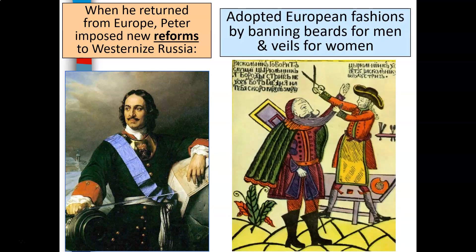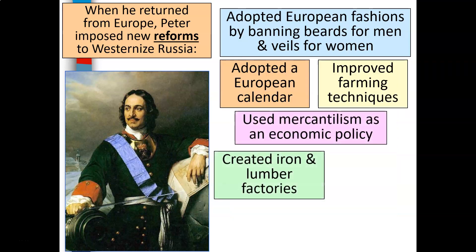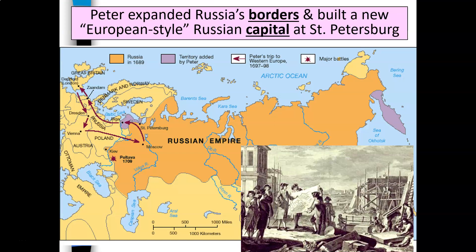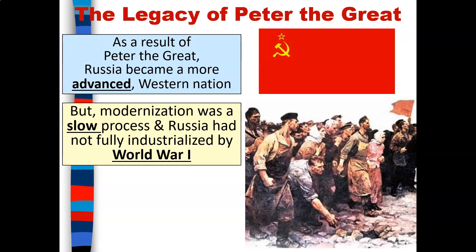When Peter returned from Europe, he imposed new reforms to westernize Russia. He adopted European fashions by banning beards for men and veils for women, adopted a European calendar, improved farming techniques, used mercantilism as an economic policy, created iron and lumber factories, modernized the army and navy, and made himself head of the Orthodox Church — similar to Henry the Eighth in England. Peter also expanded Russia's borders and built a new European-style Russian capital at Saint Petersburg.